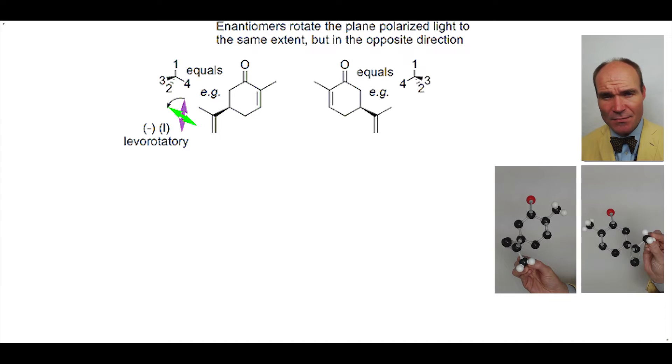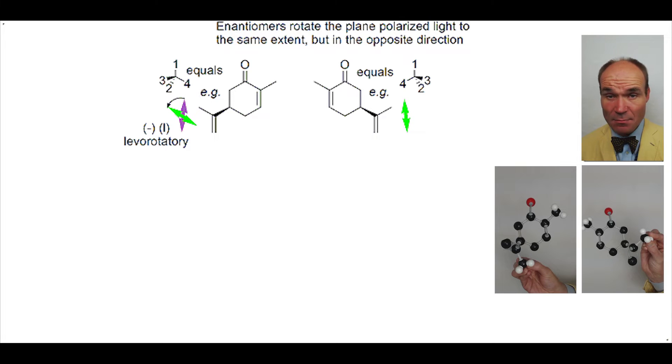The mirror image of this enantiomer represents the opposite enantiomer. This form of carvone rotates plane polarized light to the same magnitude as the minus carvone but in the opposite direction, so clockwise, or to the right.